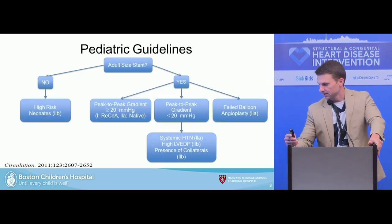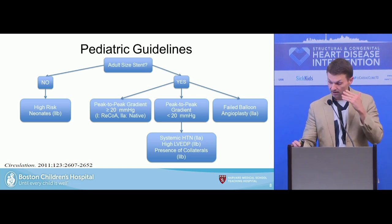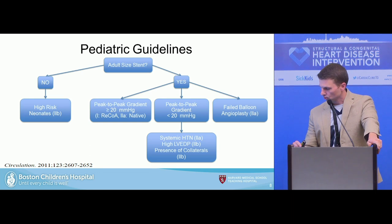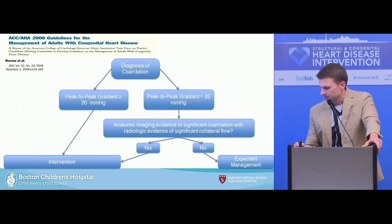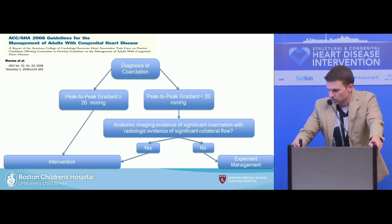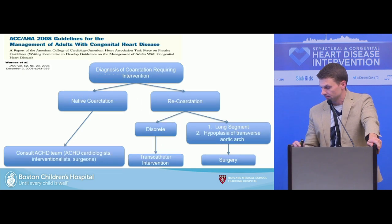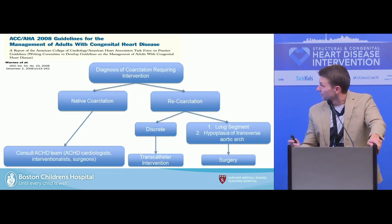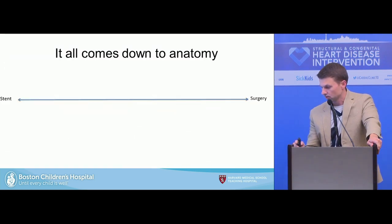If you look at the pediatric guidelines, the main requirement is that you can get the stent to adult size — the exception being high-risk neonates, sick infants with some degree of LV dysfunction. For everyone else, you're looking at the peak-to-peak gradient, considering systemic hypertension, medicines, and LVDP in the presence of collaterals. Similarly in the adult guidelines, you're mainly looking at the gradient and the presence of collaterals. With the exception of long-segment lesions, hypoplasia, and the transverse arch following re-coarctation, most of these consultations are coming to you.